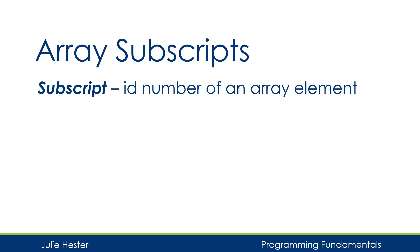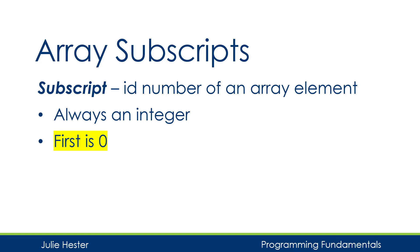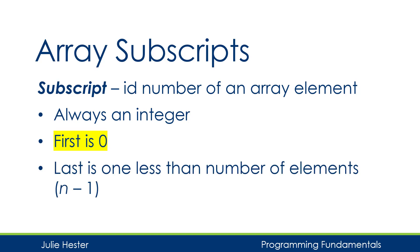So how do we access specific elements with arrays? We're going to use something called a subscript, which is just an ID number of one particular array element. Subscripts are always an integer. What might surprise you is the first subscript is going to be numbered zero. Unlike counting items as we might do as humans — where we start with the number one — when working with things in computer science, we often start with zero. Starting with zero allows our processor to run more efficiently with the way it accesses memory. Because our first element is numbered zero, our last element is going to be numbered one less than the total number of elements, or n minus one. So if I have five elements in my array, they are going to be numbered zero through four.